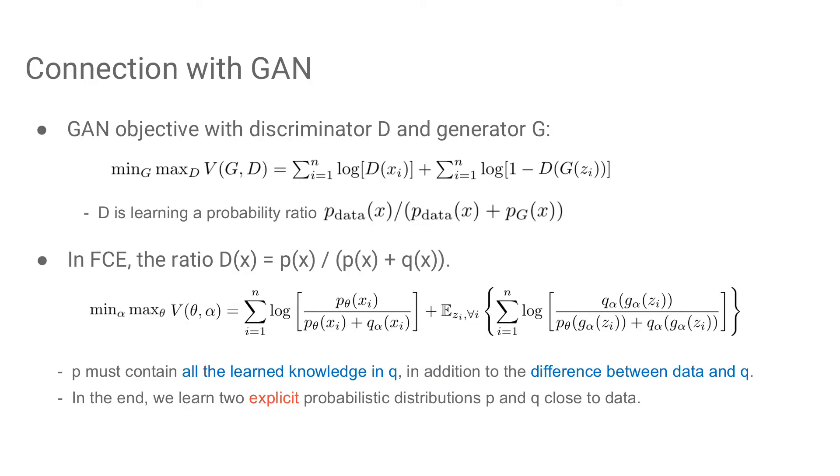Our method is the principled parametrization of GAN. Here is the GAN objective. The discriminator is learning a probability ratio, which is about the difference between P_data and P_G. In the end, if the generator G learns to perfectly replicate P_data, then D is a random guess. However, in FCE, the ratio D is explicitly modeled by P and Q. P must contain all the learned knowledge in Q, in addition to the difference between data and Q. In the end, we learn two explicit probabilistic distributions, P and Q. Both are close to data.